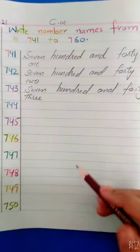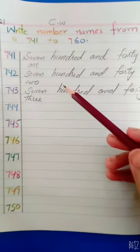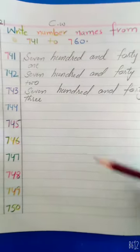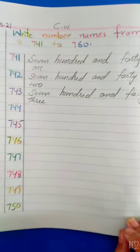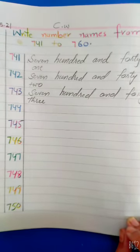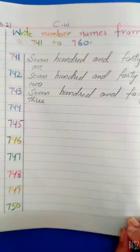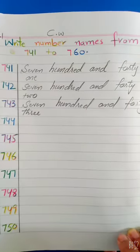Students, this way you have to complete the number names from 741 to 760. It's your homework. Complete the number names from 741 to 760 with neat and clean writing.